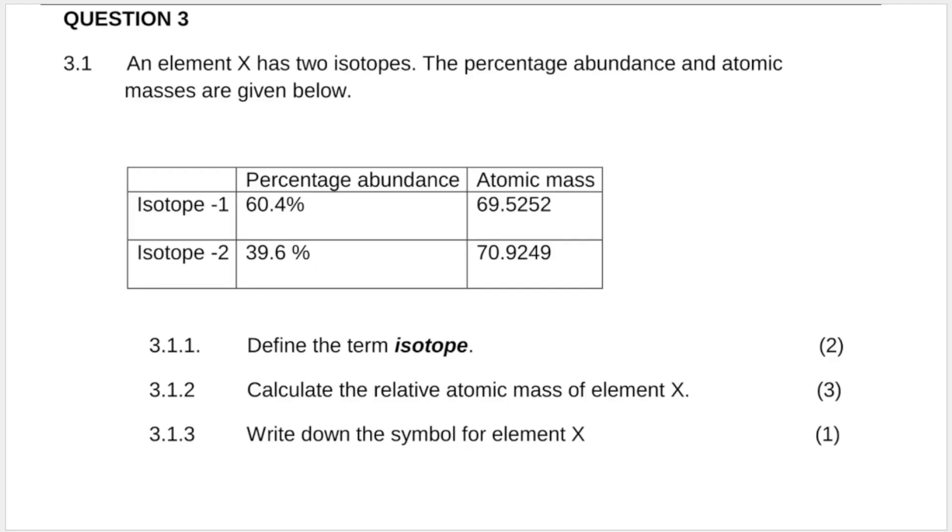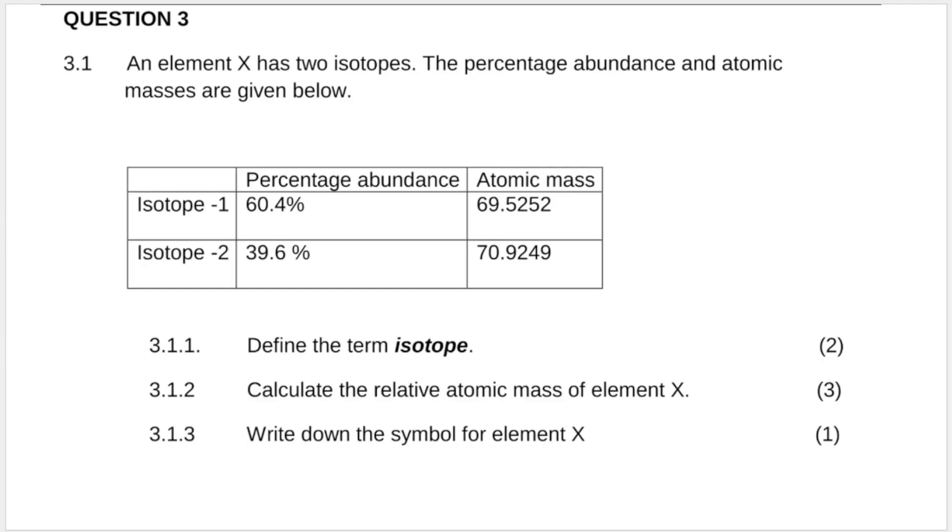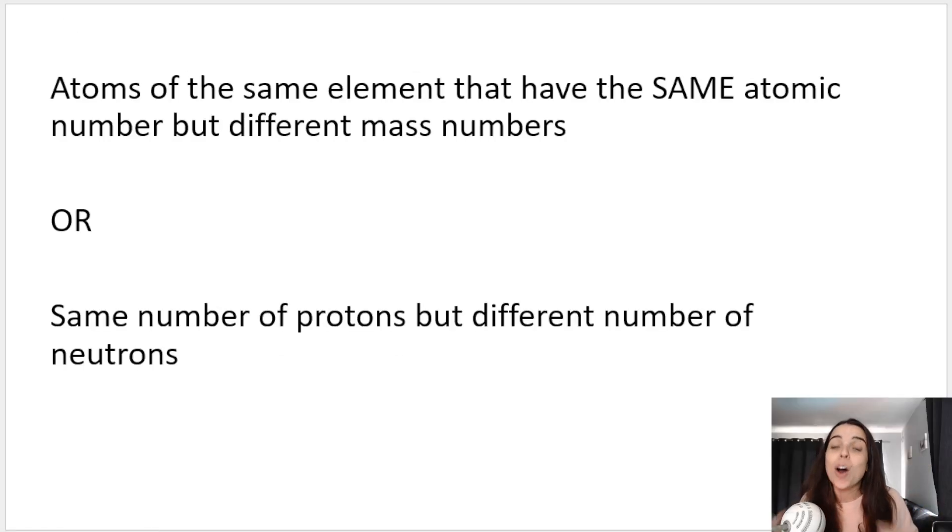Question three. An element X has two isotopes. Now dealing with isotopes and knowing how to work out the relative atomic mass of an element, all of that stuff is part of the atom. The percentage abundance and atomic masses are given below. Define the term isotope. Okay, first things first, a definition right off the bat. Something that you need to study off by heart. Isotopes are atoms of the same element that have the same atomic number but different mass numbers or you can say that they have the same number of protons which is basically atomic number.